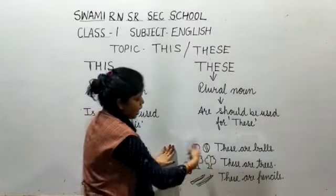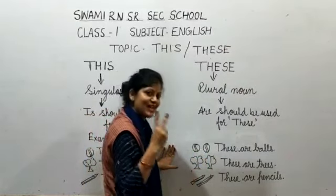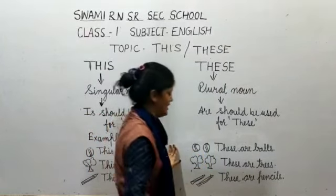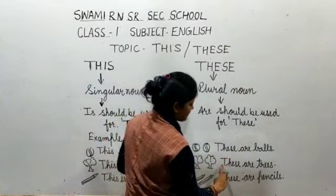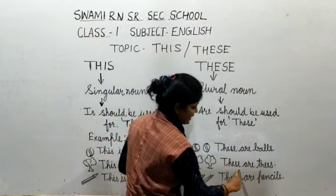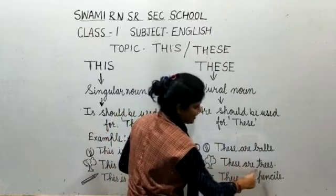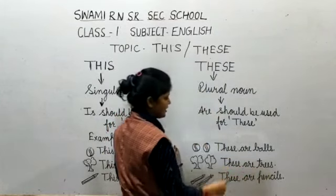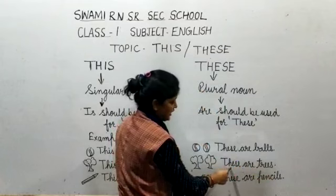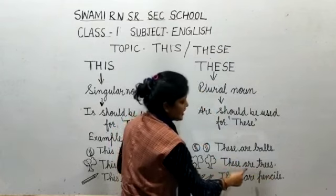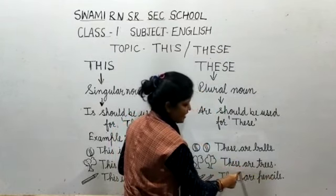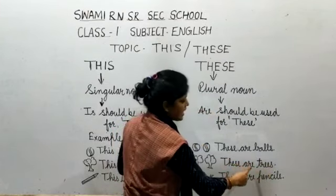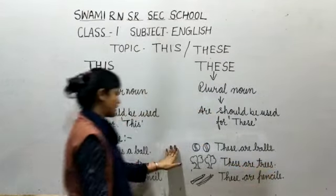On the other side, how many trees are here? Two trees are here, so we will use 'these'. All of you read with me: These are trees.